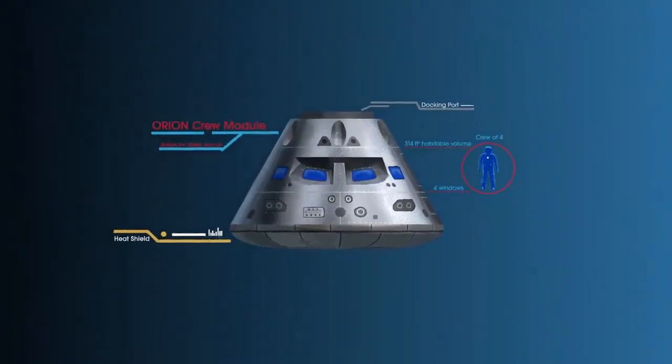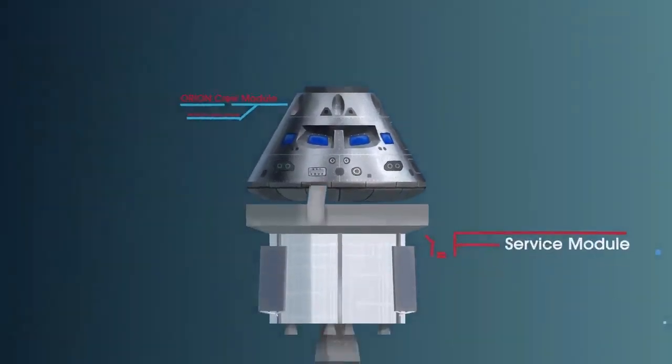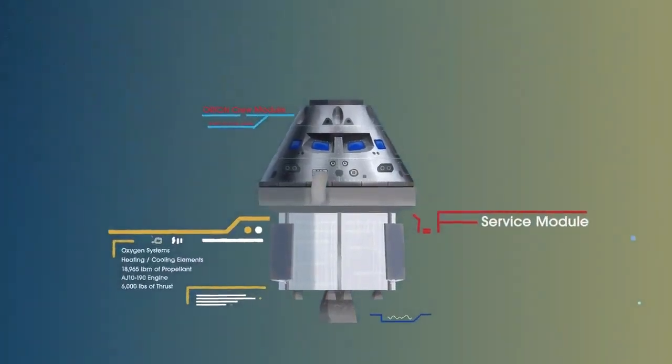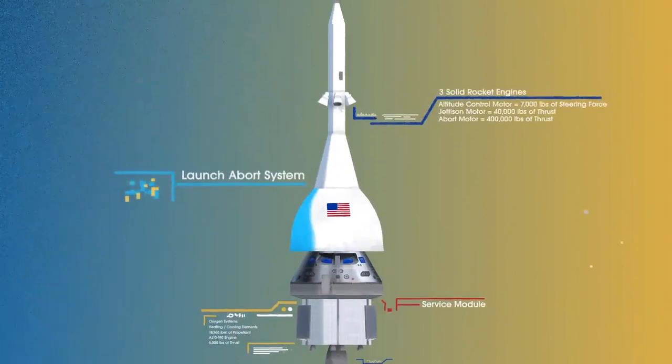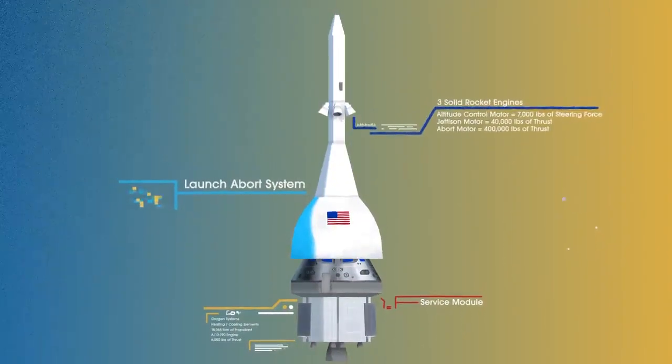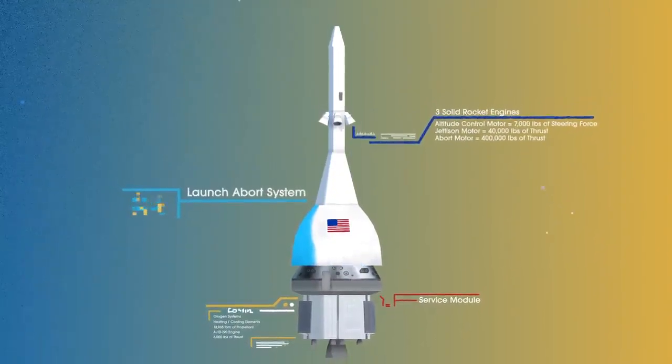The crew module, where up to four astronauts will live and work throughout the flight. The service module, with life-support systems for the crew and its own engine and fuel reserves, and a launch abort system, with engines capable of pulling the crew module to safety during launch should anything go wrong.